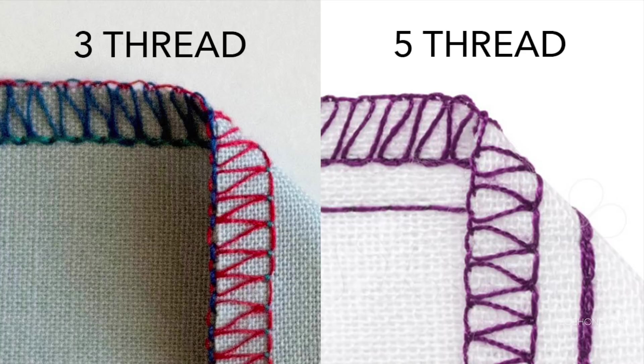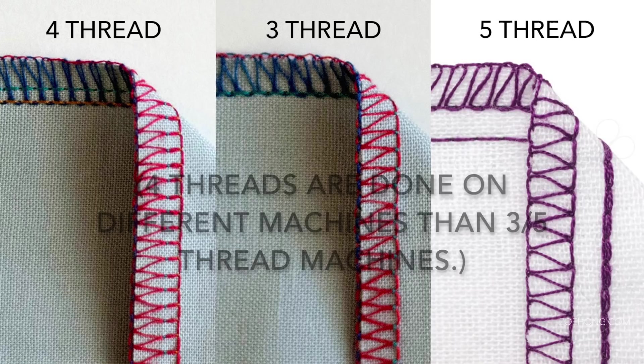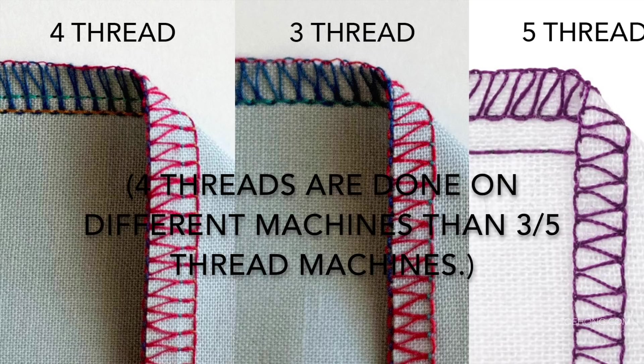And you can thread all five cones and get this straight stitch alongside the wrapping effect. There are also four thread overlocks and they only do the wrapping thing, but with four threads it's sturdier.